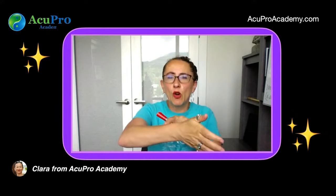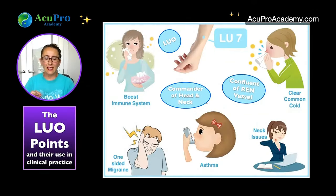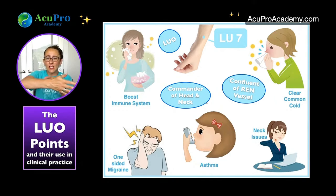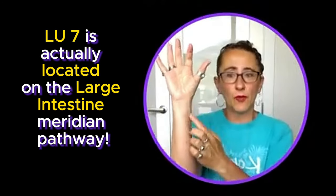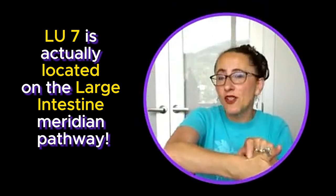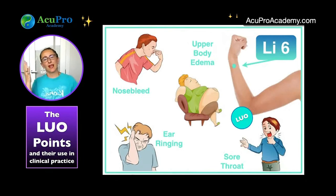The Luo point is where the collateral starts. LU7 is a Luo connecting point — the lung collateral starts at LU7. Interestingly, LU7 is actually located on the large intestine meridian, not along the lung points like LU9 or LU8. It's more in line with LI5. So LU7 is the Luo point connecting to the large intestine, and LI6 is the Luo point connecting to the lung.